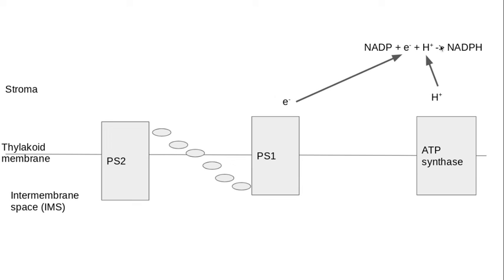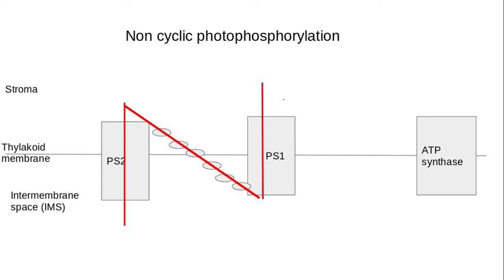This is reduced NADP, and NADP is a coenzyme which can be used to transport the hydrogen electron into the light-independent stage. That process we've just gone through is called non-cyclic photophosphorylation.